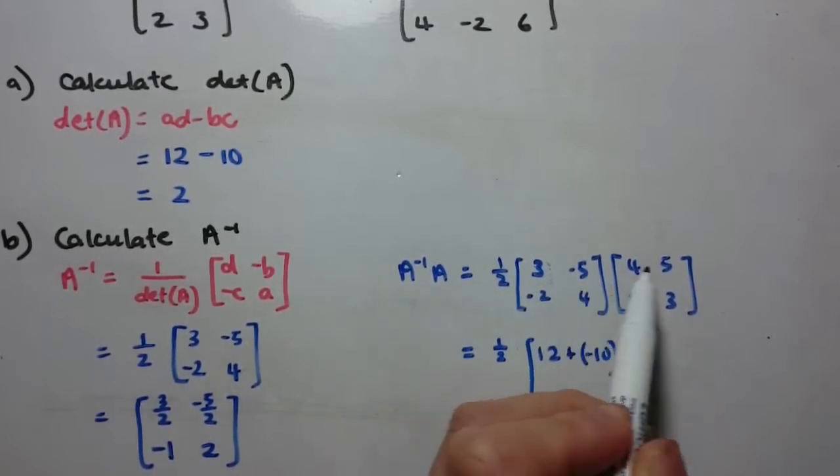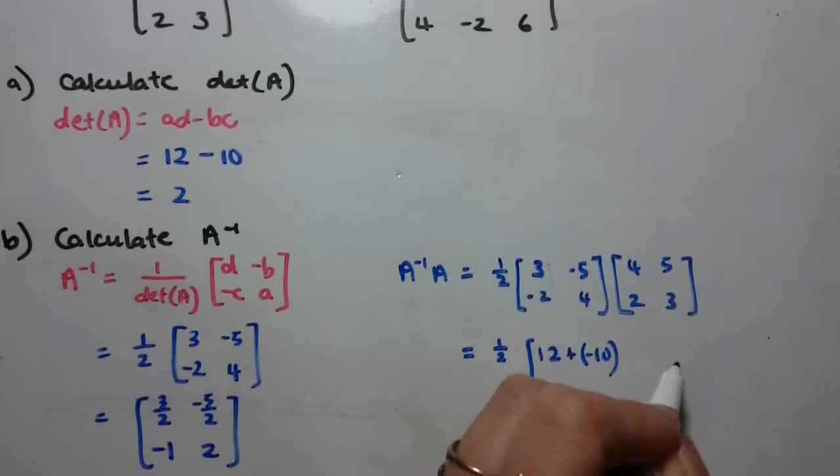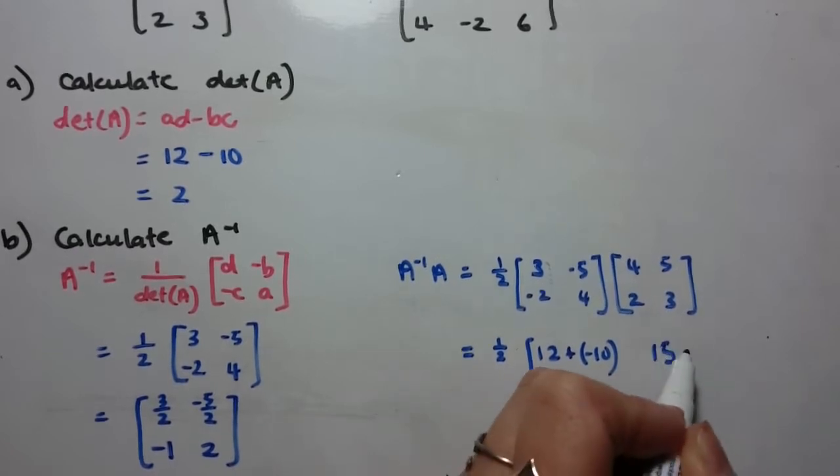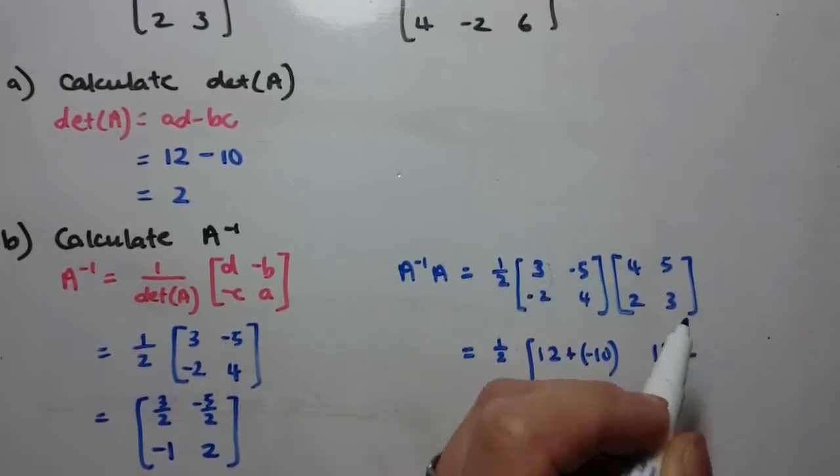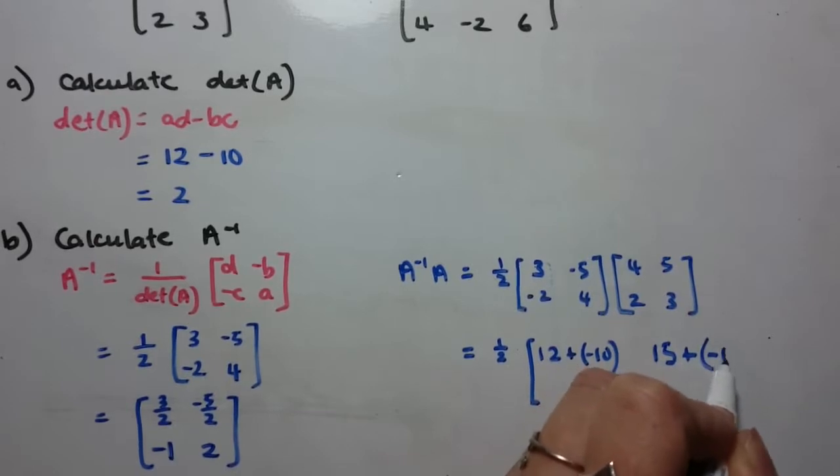First row, second column is first row by the second column, so 3 times 5, 15, plus negative 5 times 3 is negative 15.